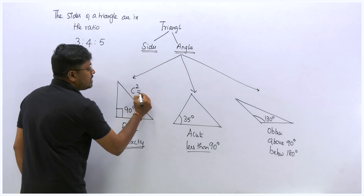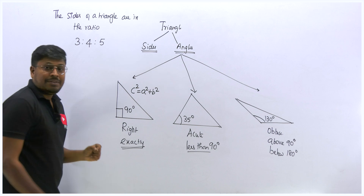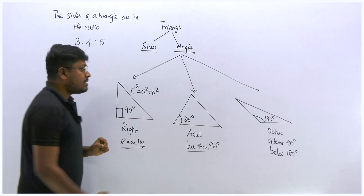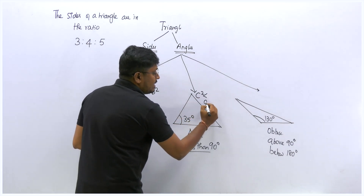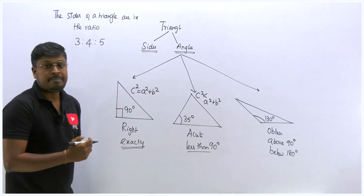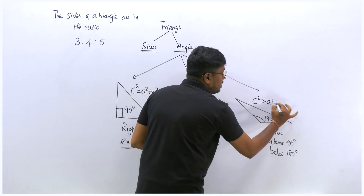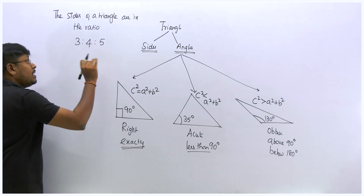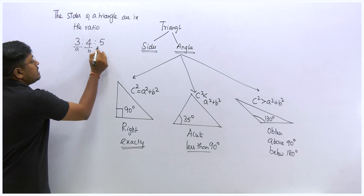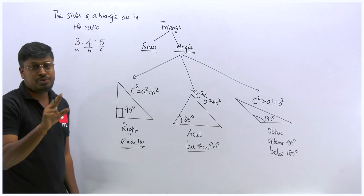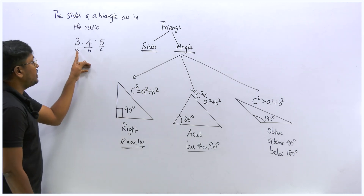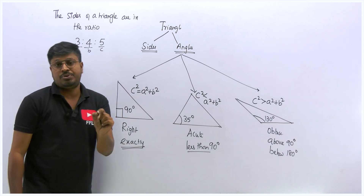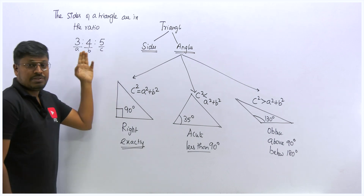To determine the triangle type from sides, we use the Pythagorean theorem: c² = a² + b². If c² equals a² + b², it is a right angle triangle. If c² is less than a² + b², it is an acute angle triangle. If c² is greater than a² + b², it is an obtuse angle triangle. When sides are given as a ratio, the first value is a, second is b, and third is c.